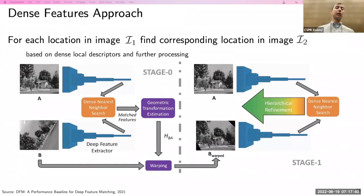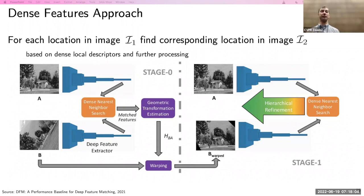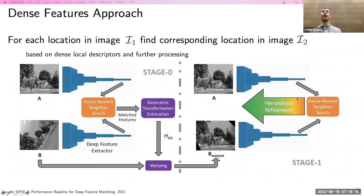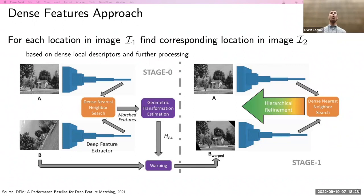We can also estimate dense features — there was a paper recently where local features are estimated for each pixel in the image. For each pixel, we do a dense nearest neighbor search to get correspondences used for warping images and defining some initial transformation between images. We then do refinement in an iterative manner. These are the applications I wanted to show — affine correspondences are actually useful and not just a cool-sounding concept.